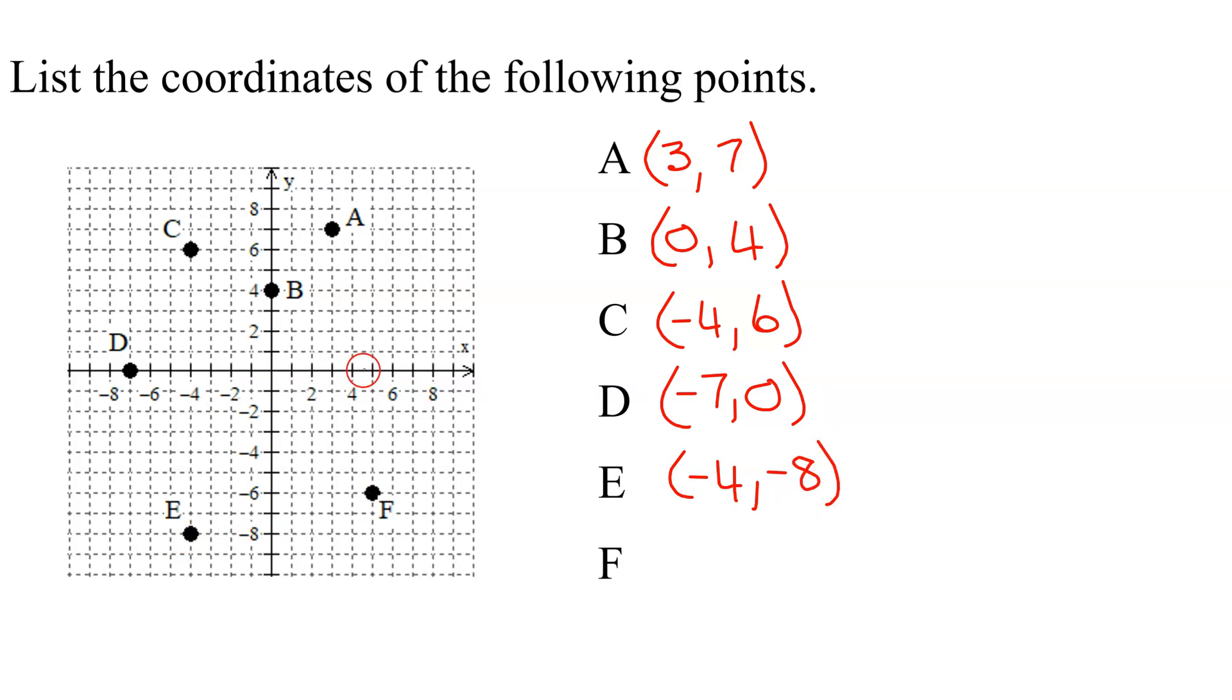Last point, F. The x-coordinate up here, what is it? It's 5. The y-coordinate is negative 6. So that's how you read the coordinates of points from the graph.